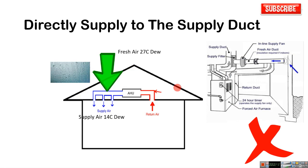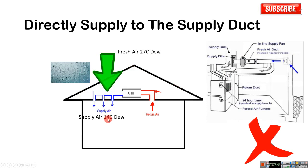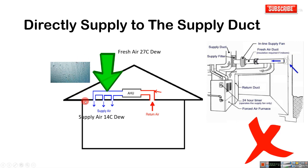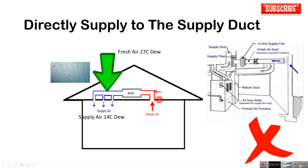Another wrong practice is to directly supply fresh air into the supply duct. The supply duct dew point temperature is very low — it is 14°C. So if we supply fresh air with a dew point of 27°C into the supply duct, there will definitely be condensation, and you can see water droplets coming from the diffusers.